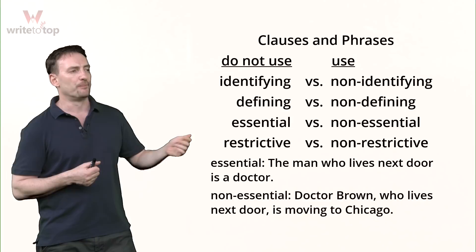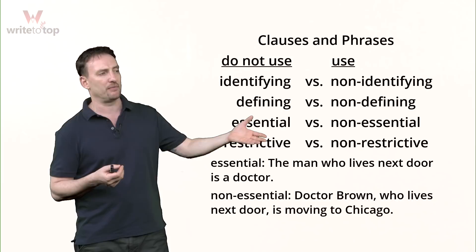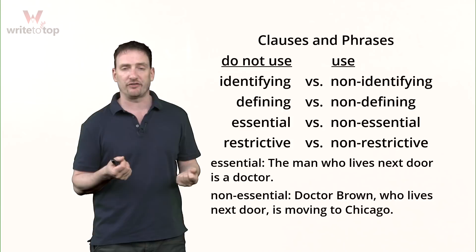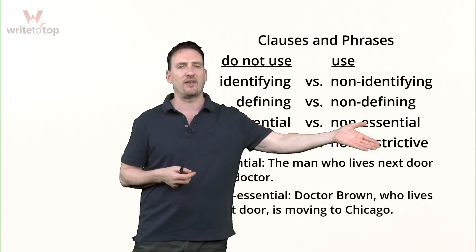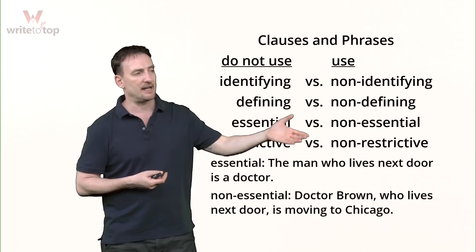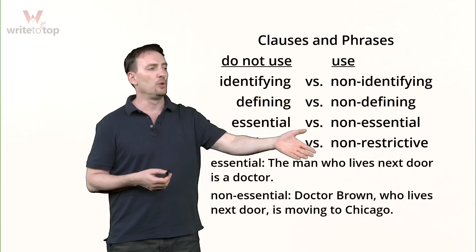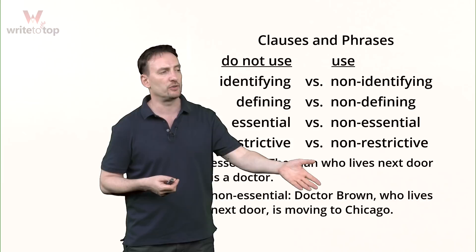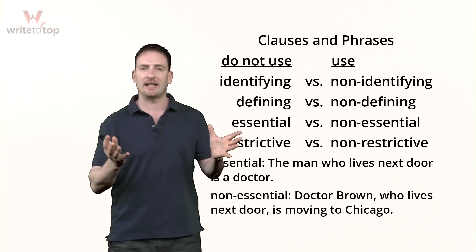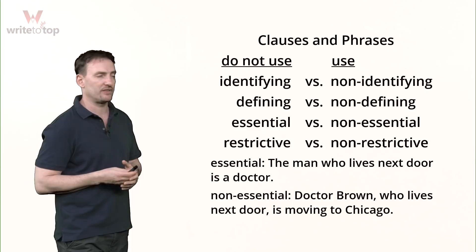Here's a quick example. Essential use of a clause: 'The man who lives next door is a doctor.' The independent clause is 'the man is a doctor,' but because I don't know which man is being referred to, I need to identify him — so I need an essential adjective clause. It needs to be in this sentence, otherwise the meaning is not complete, and because it needs to be there, I don't use a comma. Non-essential: 'Dr. Brown, who lives next door, is moving to Chicago.' Dr. Brown is a specific person, so 'who lives next door' is just extra information I can take out — it goes between commas.